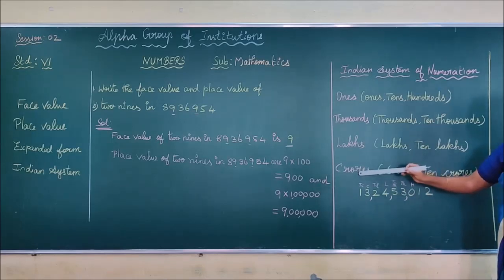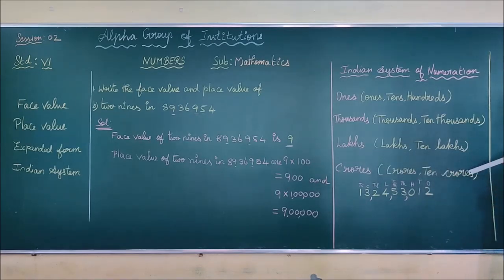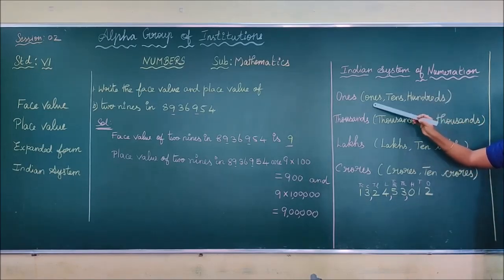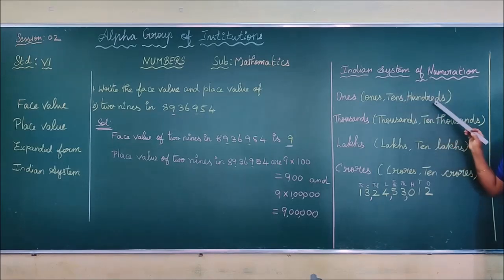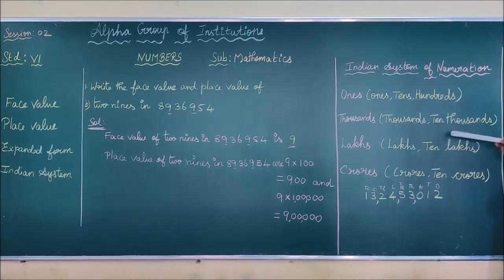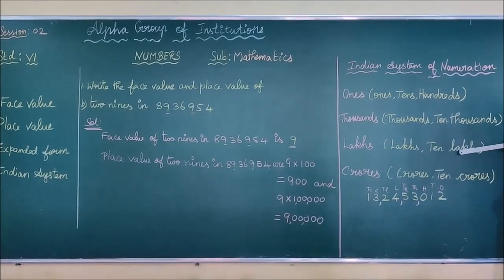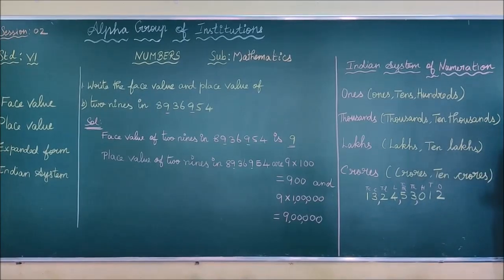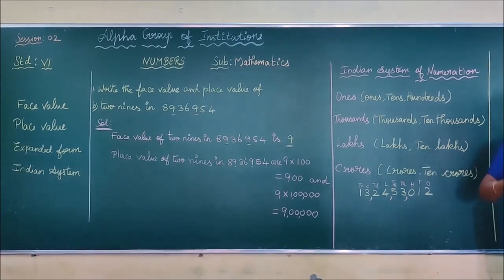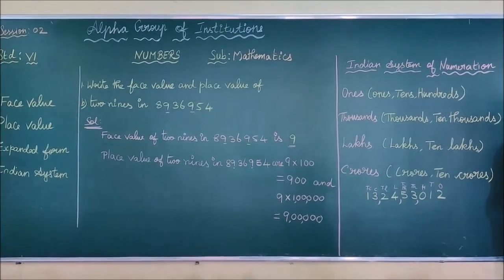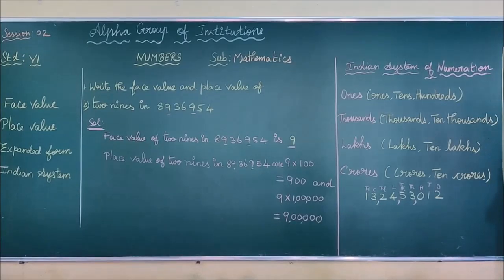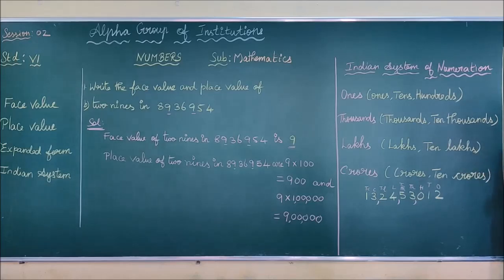Now we are going to list the place values of the Indian system. Ones, tens, hundreds, thousands, ten thousands, lakhs, ten lakhs, crores, ten crores. Normally we have nine place values in the Indian system. Let us say them together: ones, tens, hundreds, thousands, ten thousands, lakhs, ten lakhs, crores, ten crores. You are going to remember all these nine place values in the Indian system of numeration.